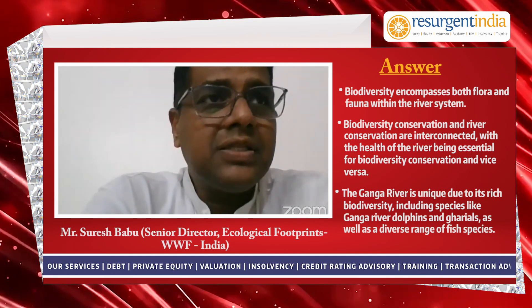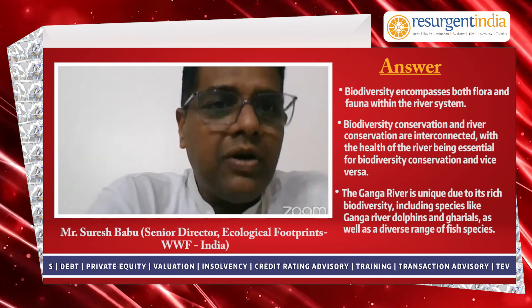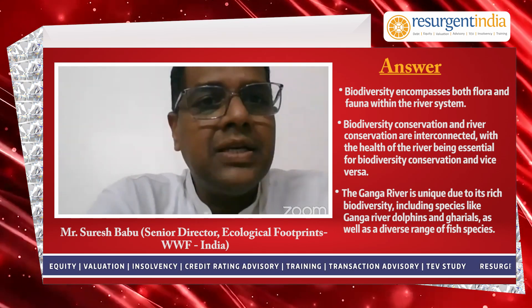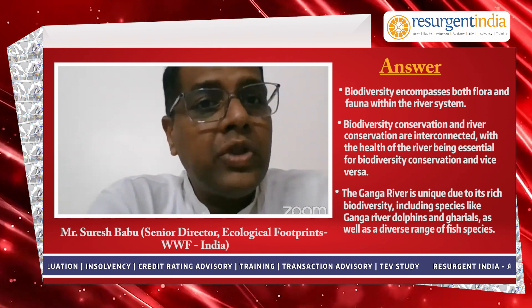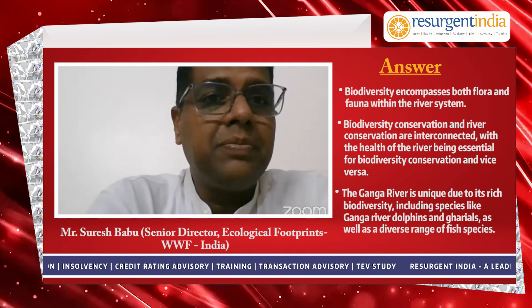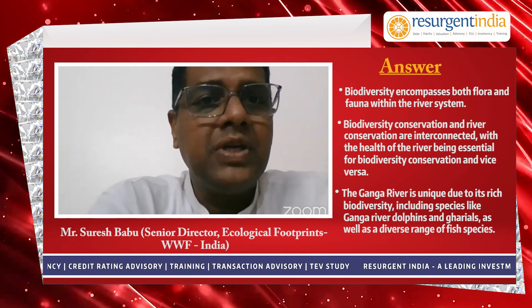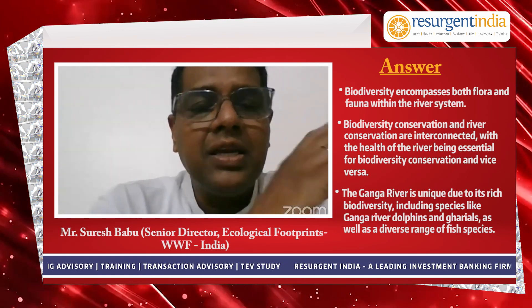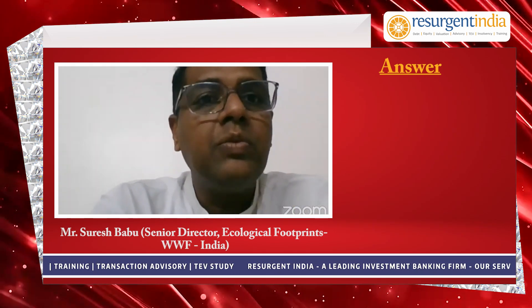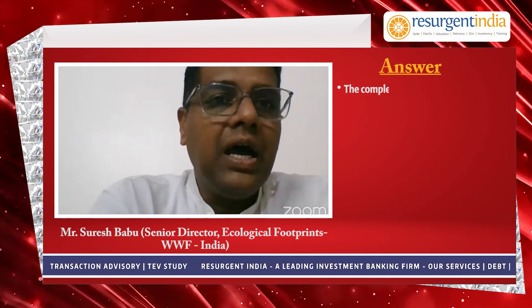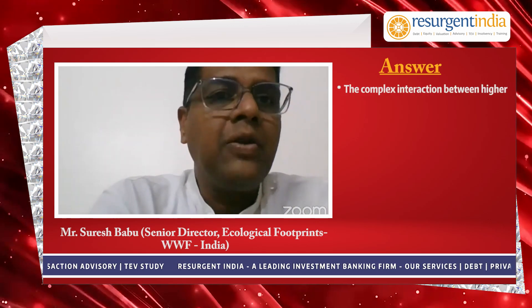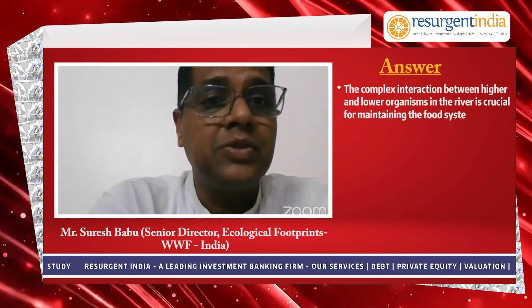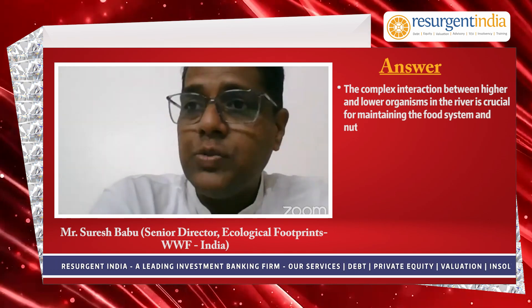What makes our system unique is also the lower organisms. As presented in a slide, there are more than 230 plus species of fish available. It's this complex interaction between the higher strata of animals and the lower ones which maintains the food system and also the nutrient cycling, which is very important for a river system to be healthy.